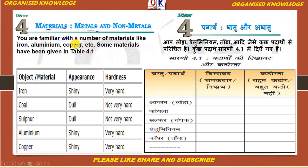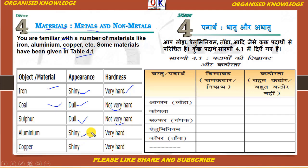The number of materials like iron, aluminium, copper etc — some materials have been given in Table 4.1. Toh aap loha, aluminium, tamba adi jaise kuch padartho se bhalibhanti parichit ho. Agar hum iron ki baat karein toh iron kaisa hai? Iron kuch kuch shiny hai, aur hardness kaisi hai iske? Very hard. Coal is dull and it is not very hard. Sulfur is also dull, and it is not very hard. Aluminium is very shiny and it's very hard. Copper is shiny and very hard. Toh is tarah se aap dekh sakti ho ki kuch padarth chamakdar hain, kuch nisprabh hain, kuch bahut kathor hain, kuch jyada kathor nahi hain.